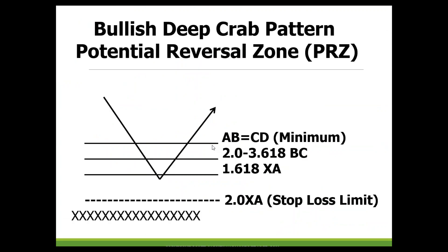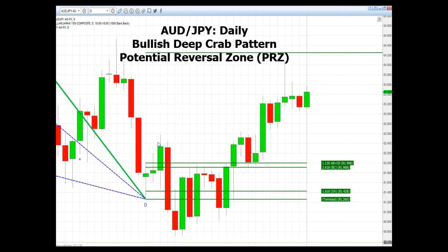The bullish deep crab potential reversal zone will have a layout where the AB equals CD is a minimum requirement, but again typically extended alternate. We look at the BC extension and focus on what happens at the 1.618 measurement. We utilize a general 2.0 stop loss but might be a little bit more loose in this interpretation depending on how volatile the price action is into the zone. Looking at the Aussie Yen daily chart as it comes in and hits the numbers, there's some extreme action but it settles out after a few days — immediately after hitting that 1.618 is where you start to see stabilization. It extends past the zone a little bit, but we do expect that with crab patterns.